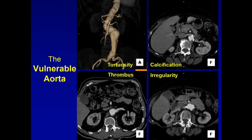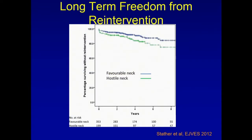We can summarize the vulnerable aorta — the four horsemen — with one concept: parallel-walled. You really need a parallel-walled aorta, in addition to sticking to all the other IFU requirements specific to each device. Tortuosity, calcification, thrombus, and irregularity are really detrimental to the device. A paper from 2012 looked at long-term freedom from intervention in favorable versus hostile necks, and not surprisingly, the hostile neck had a lower percentage surviving without reintervention.